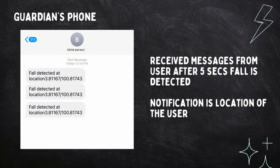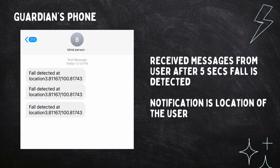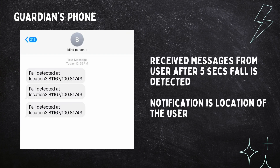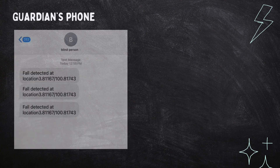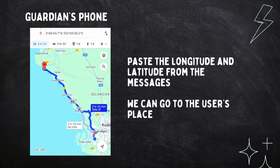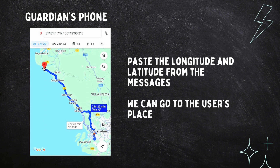Instantly, after five seconds of fall detection, the guardian will receive a notification — a message from the user. The notification contains the location where the user needs help, to alert the guardian. The message received includes the longitude and latitude of the user's location.